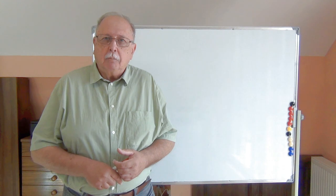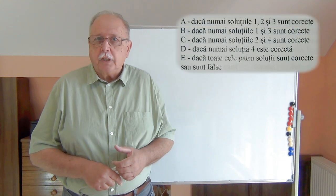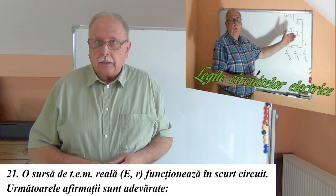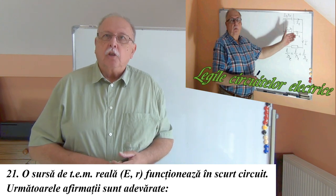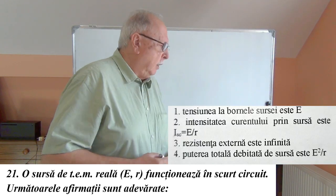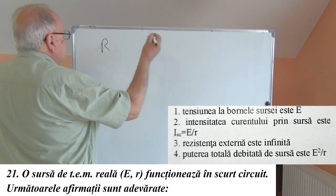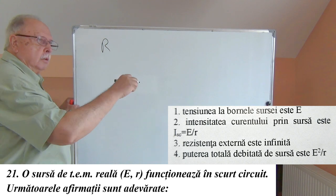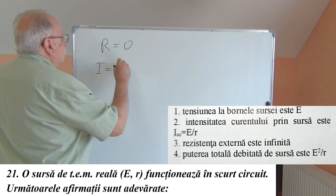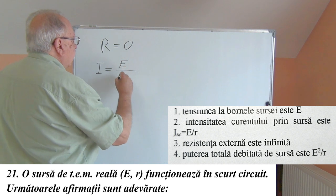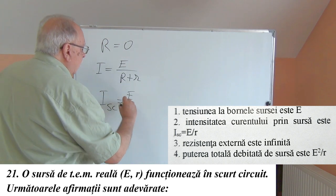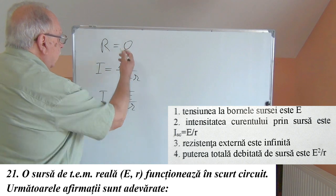The text asks us to answer the questions according to the rule you already know. Let's begin. A real EMF source with characteristics E (large) and R (small) operates in short circuit. Short circuit means the external resistance — the resistance of the circuit connected to the source — is zero. Applying Ohm's law for the entire circuit: I = E / (R_external + R_internal), and since R_external = 0, the short-circuit current becomes I = E / R_small.